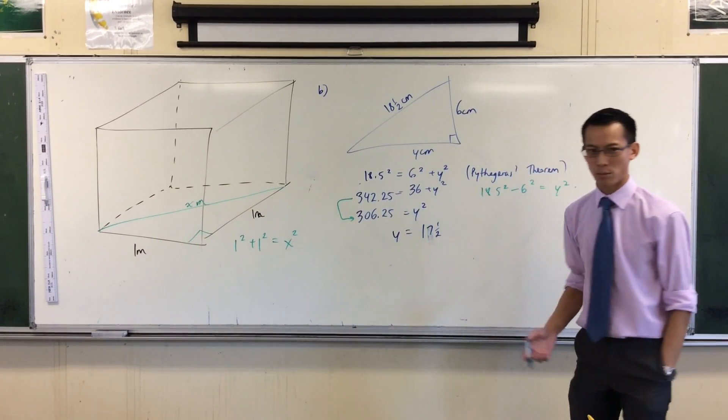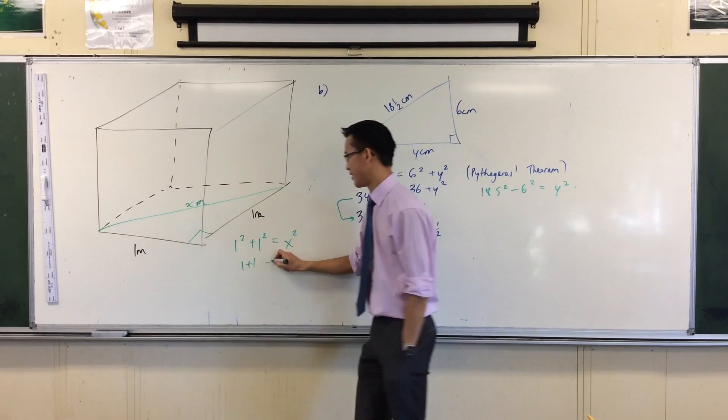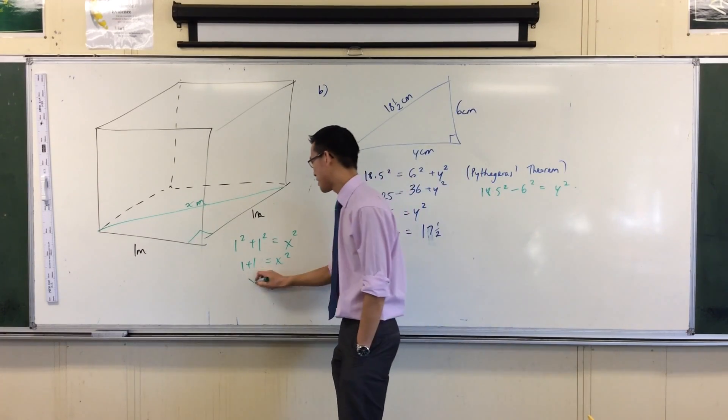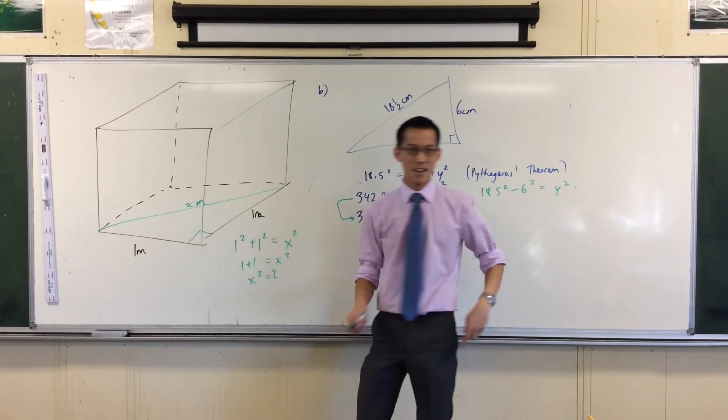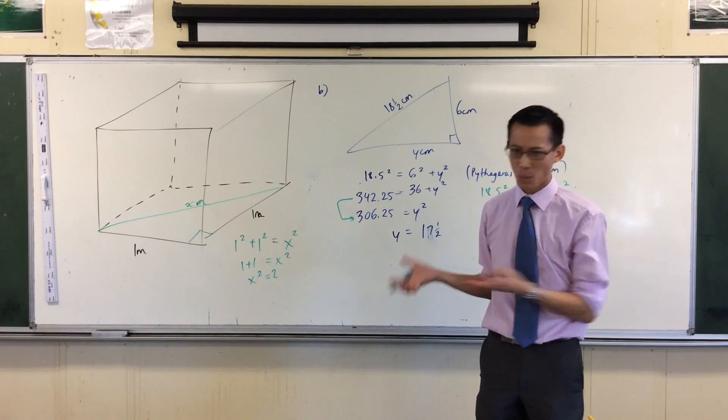So one squared plus one squared. What's one squared? It's one. So I have a big complicated number to work out over there. Oh my god, it's two. So that means the actual length is not two though, that's the square of the length.